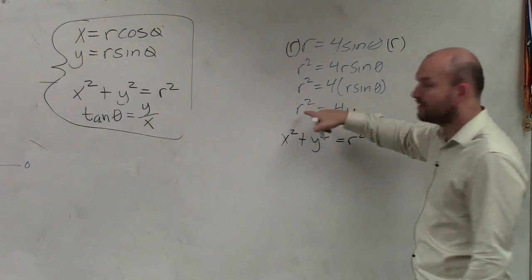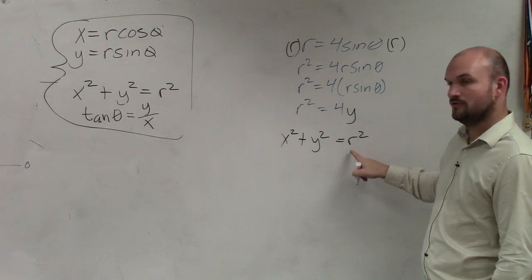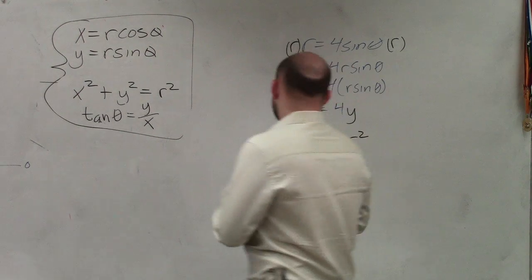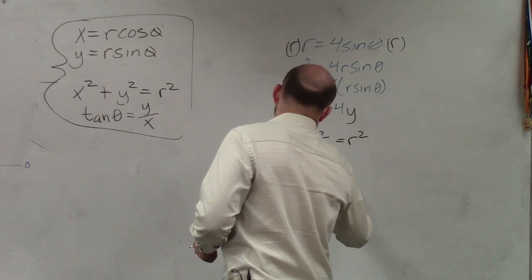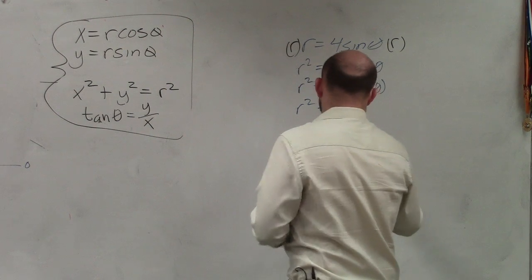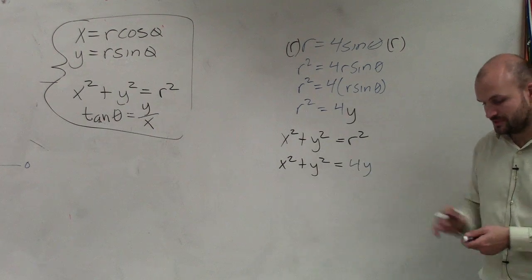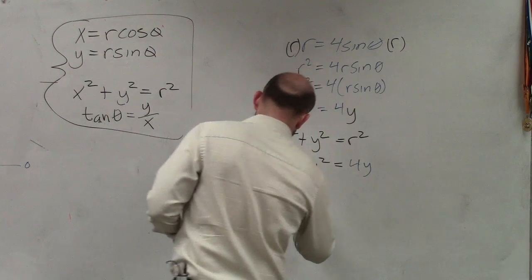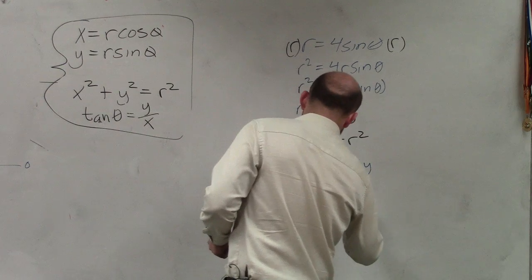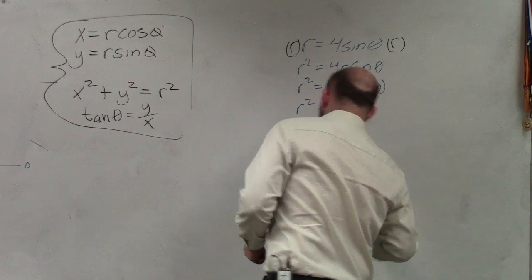And what is r squared equal to? 4y. Then I can subtract this to the other side. And I finally get x squared plus y squared minus 4y equals 0. And now I have a rectangular equation that I can graph.